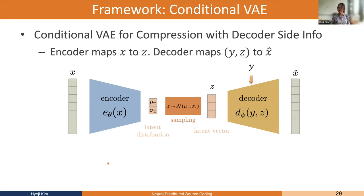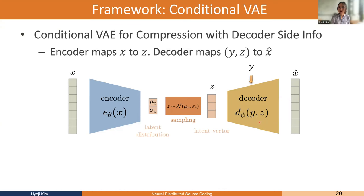Our framework is fairly straightforward — we generalize the VAE to a conditional VAE. The decoder has access to side information Y while the encoder does not, so we simply give Y as an input to the decoder and keep the encoder as is. This is a conditional VAE. For the objective, we establish a connection between the distributed source coding problem and introduce a modified evidence lower bound: a natural thing to optimize is the conditional log likelihood log P(X|Y), but this is intractable.